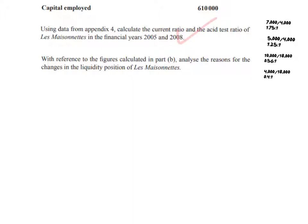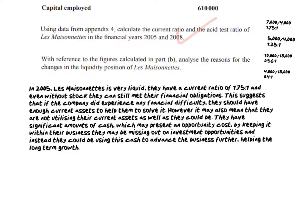The next question asks you to analyse the reasons for the changes in liquidity positions. In 2005, the business is in a very strong financial position; if they experience any financial difficulty, they have enough current assets to handle it. However, the consequence of such strong liquidity is opportunity cost — what could they be doing with that large cash balance? They could be spending it on investment opportunities or advancing the business further, but instead they're simply storing it and not using it efficiently.